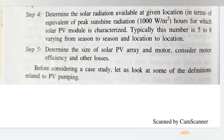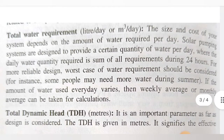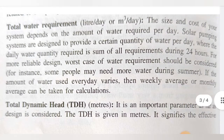Before considering a case study, let us look at some definitions related to the PV system. The first definition is total water requirement, which we have seen in step one. Total water requirement means how many liters of water you require per day, or you can calculate it in cubic meters per day.